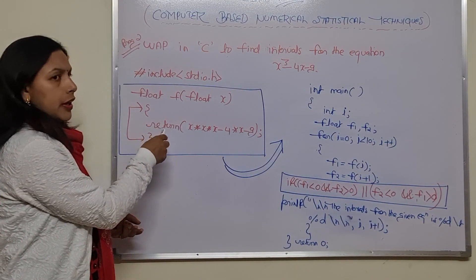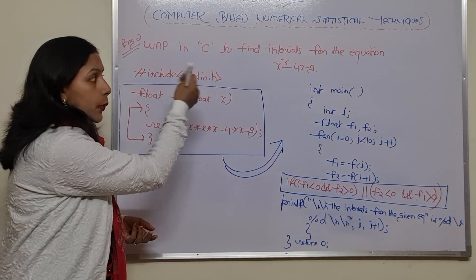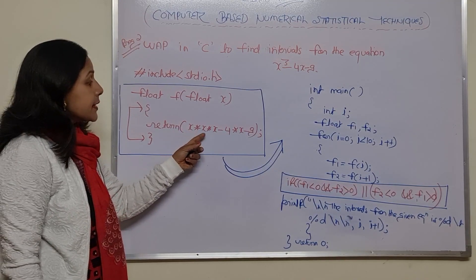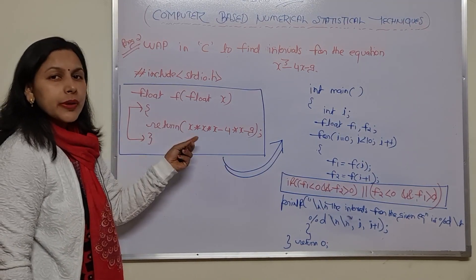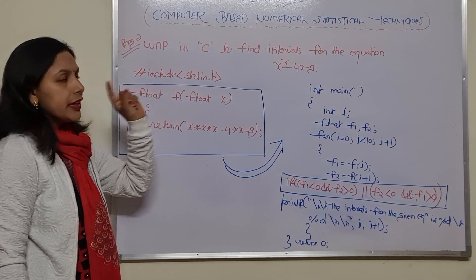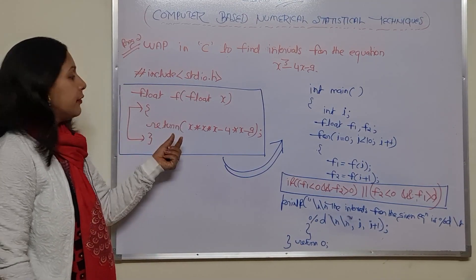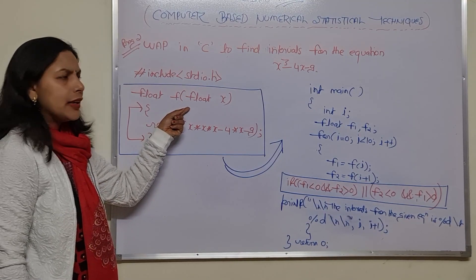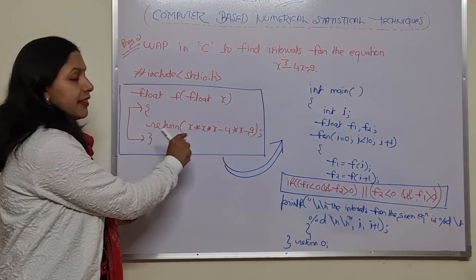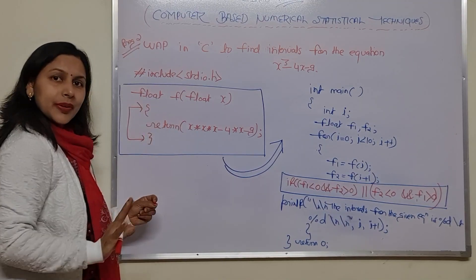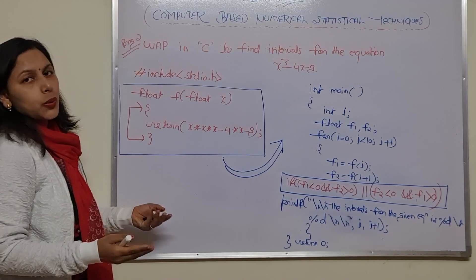In this function, we are just returning the value for the equation, that is x cubed minus 4x minus 9. So this function takes x and returns the computed value for the equation. After that, we just close it. This is one separate function for the equation.